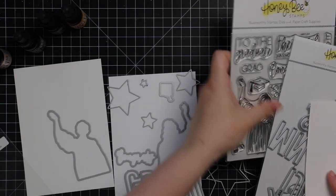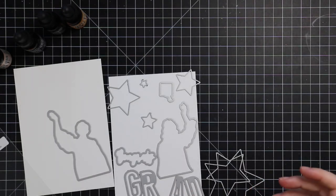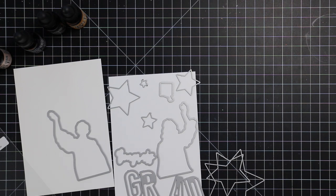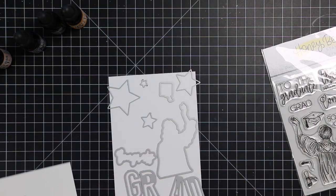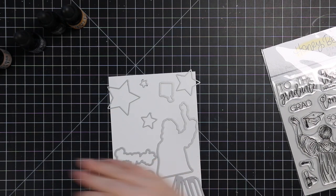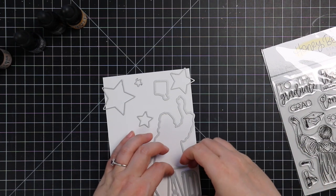I started off with my card front panels and I had a rough idea in my head, so I just laid out some of the coordinating dies, the letter dies, and some of the stars that I'm going to use to create my layouts. Once I was happy with that, I'll set all of that aside.